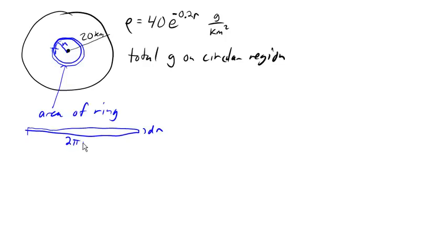So the area of this ring ends up being 2πr dr, and that's an area, so that's kilometers squared.